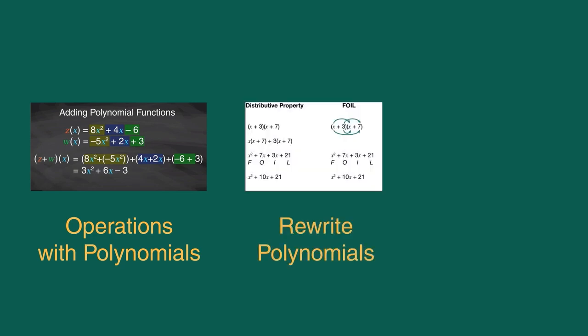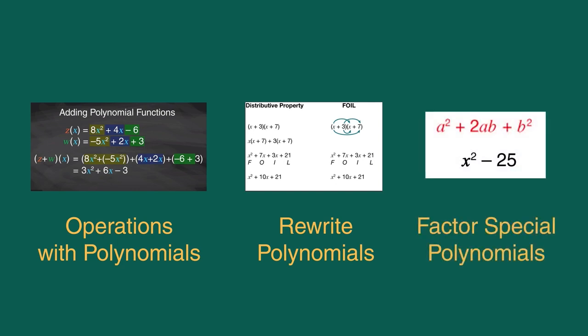Students will rewrite polynomial expressions using the distributive property, factor trinomials in the form ax² plus bx plus c including perfect square trinomials of degree 2, and factor binomials that are the difference of two squares.